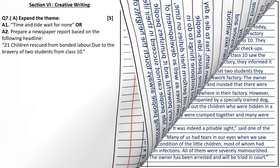The next question is question 7A: prepare a newspaper report based on the following headline — 21 children rescued from bonded labour due to the bravery of two students from class 10. In report writing, first give the headline: 21 children rescued from bonded labour.